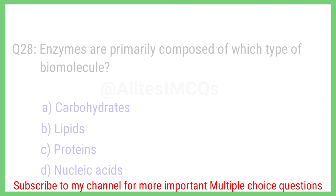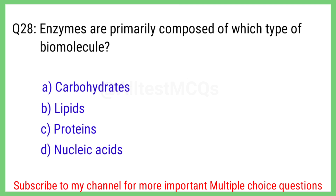Question number 28. Enzymes are primarily composed of which type of biomolecule? The right answer is option C. Protein.